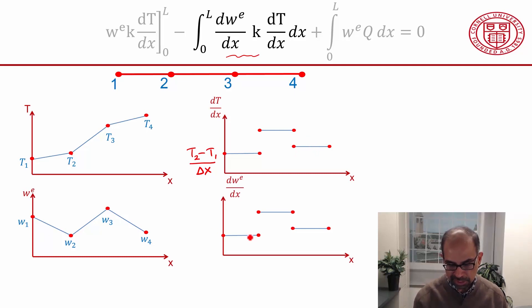And that's the derivative of the weighting function, and again that's going to be piecewise constant. For instance, this value here is going to be w2 minus w1 divided by that distance which is delta x. And then I'll have to go and figure out what it is for the second element and so on.